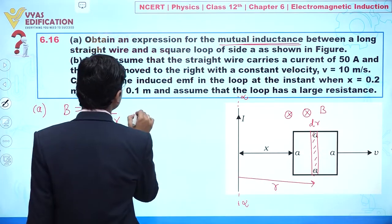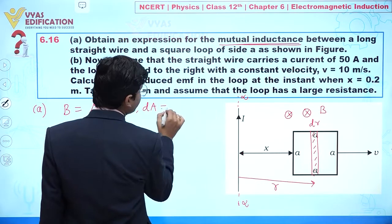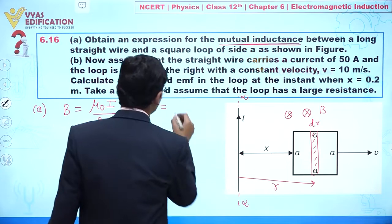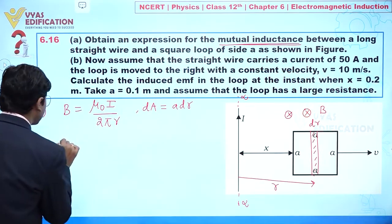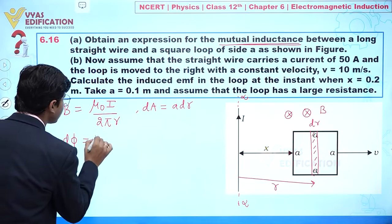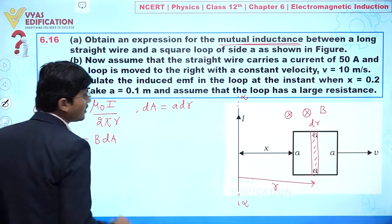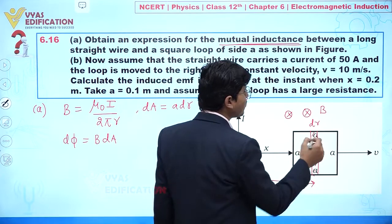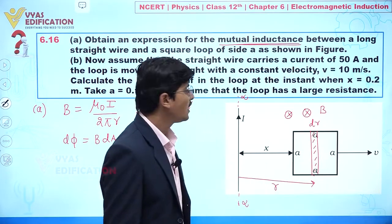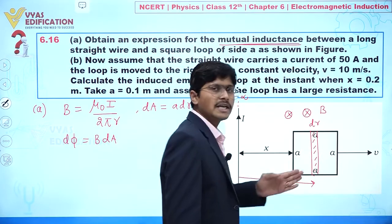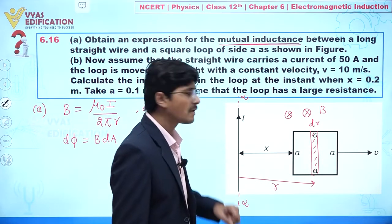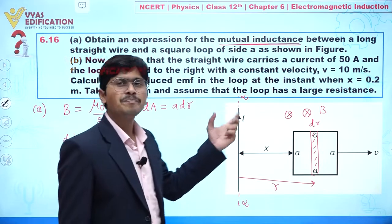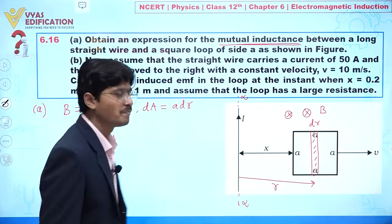The area element dA is given by a·dr. So dφ = B·dA. Since the area vector is perpendicular to the square loop and B is also in the same perpendicular inward direction, the angle between B and the area vector is zero.